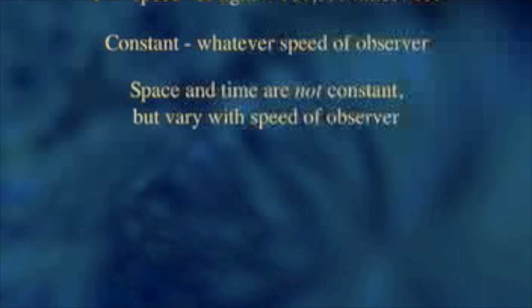All observers measure the speed of light to be the same. The revolutionary thing that came out of that was that space and time are not constant, but vary with the speed of the observer. Space and time are not fixed.